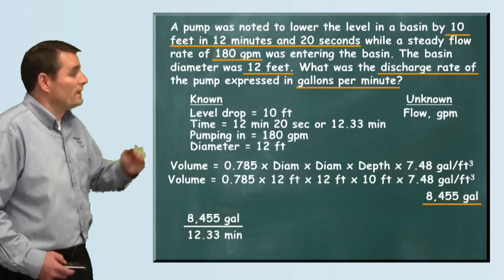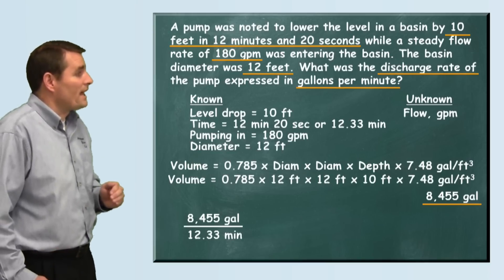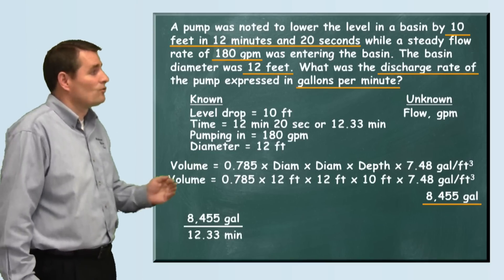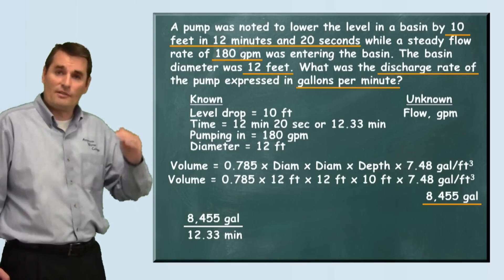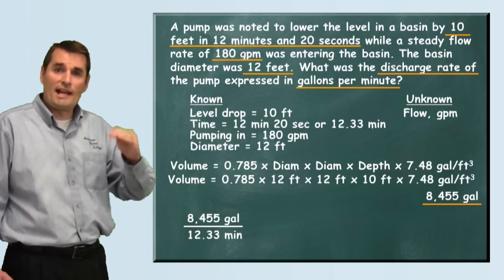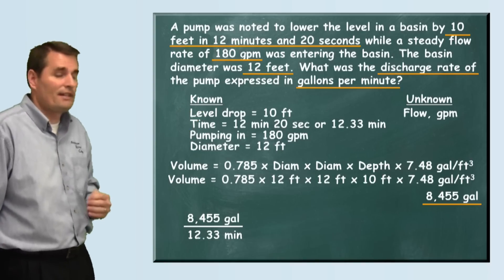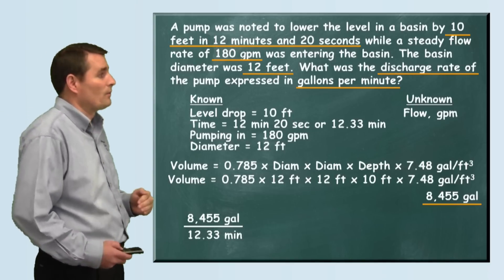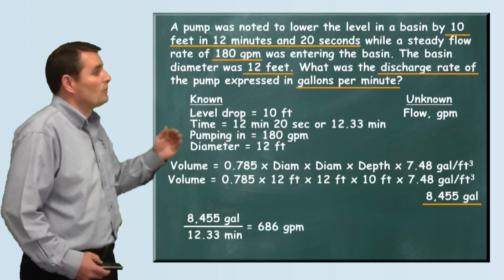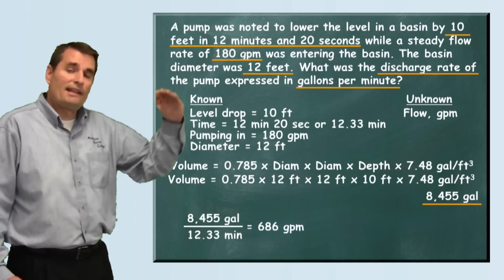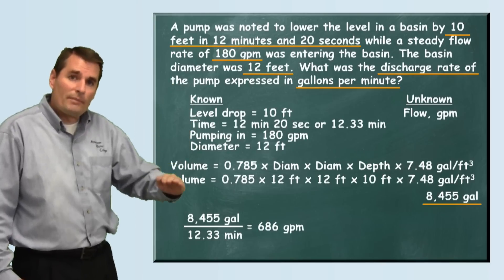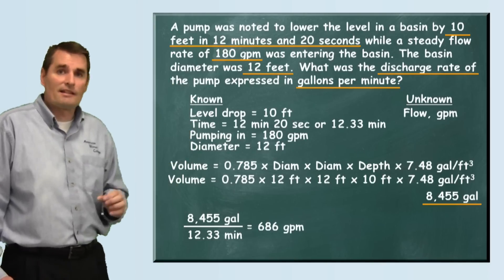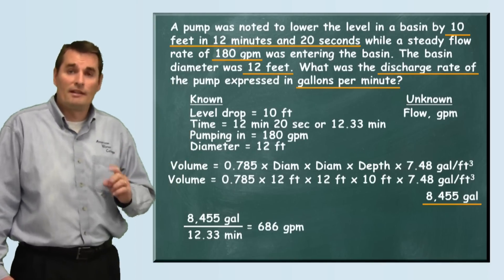We dropped that level — 8,455 gallons — in 12.33 minutes. Dividing 8,455 by 12.33 gives us our gallons per minute, and we find that the level was dropping at a rate of 686 gallons per minute.